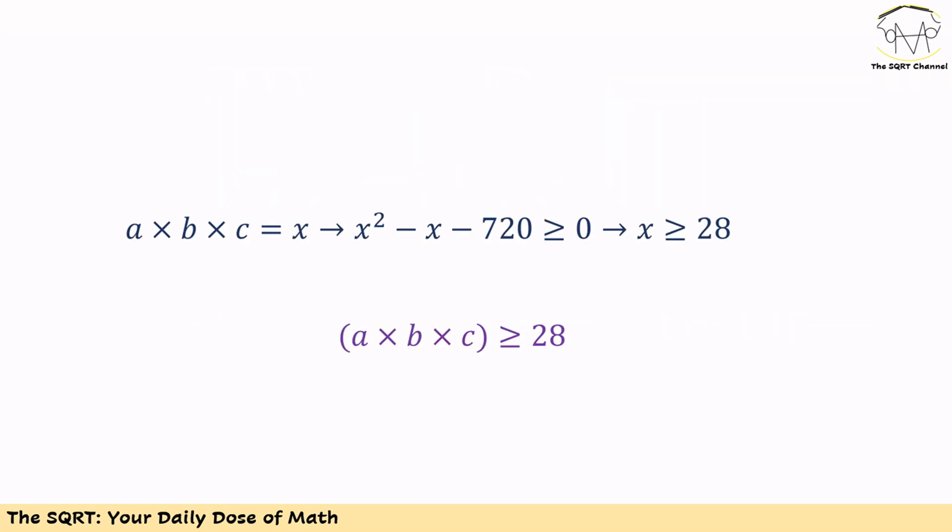The inequality is really simple. Let's use X for A times B times C. Then the inequality is X squared minus X minus 720 greater than or equal to 0.